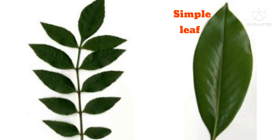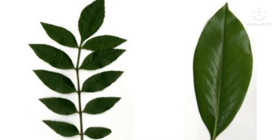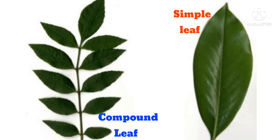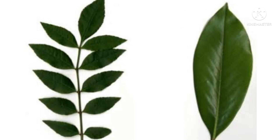There are two types of leaves: simple leaf and compound leaf. Simple leaves are those whose plate is not divided to the midrib. For compound leaf, the leaf plate is completely divided, forming leaflets.